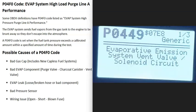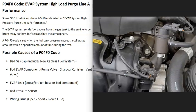For example, if you also got a P0449 code — evaporative emission system vent valve solenoid circuit — it would be a good idea to go check out that vent valve. You can go through and test these components to see if they're working. There's a full video linked in the description on how to test all these components.